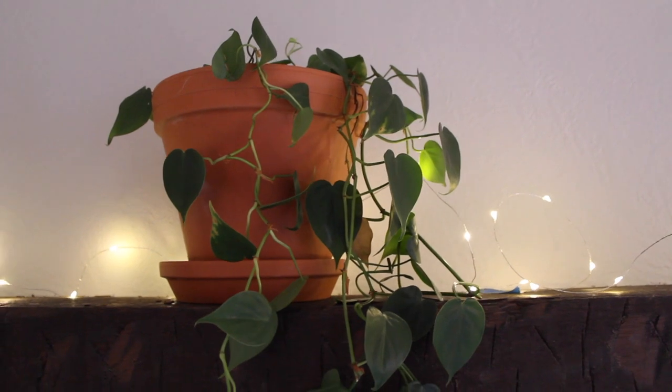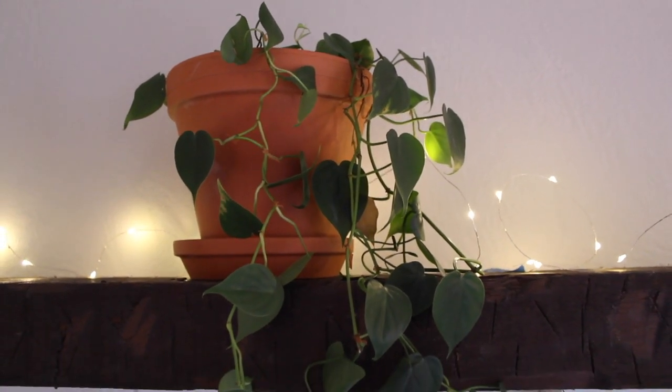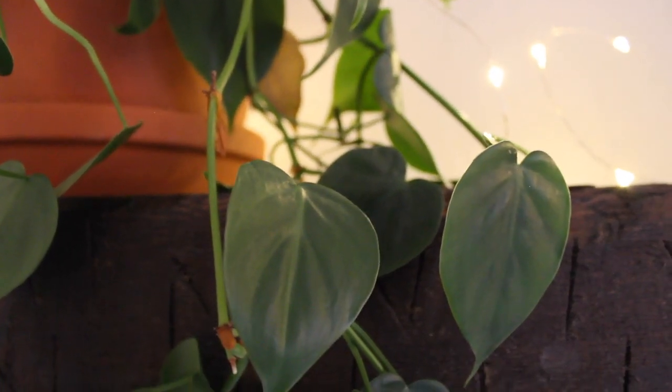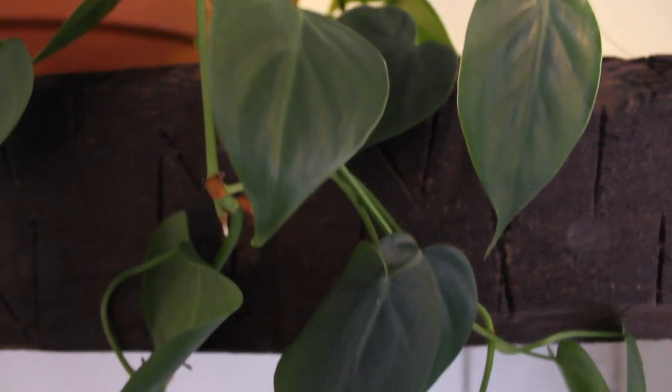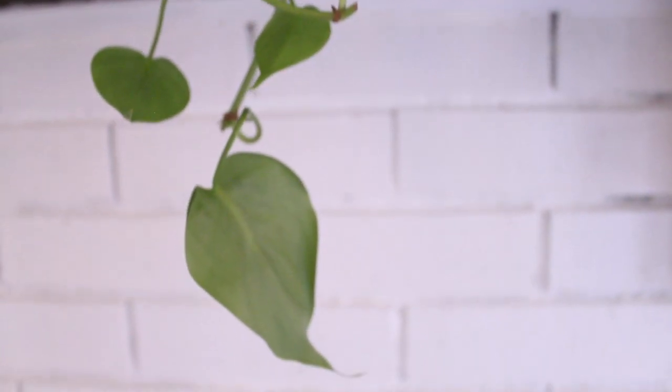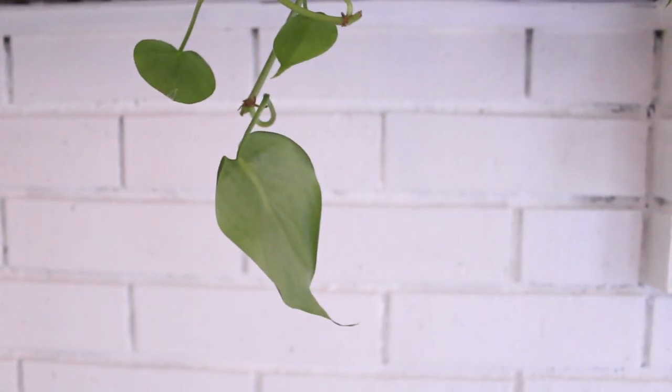Above that I have my heart leaf philodendron. I also propagate a lot from this plant. I just gave it a trim a few weeks ago - normally the vines are a lot longer. Anytime I propagate vines from this, I just stick the new vines back into that pot and just let them fall over the edge. This one's been a lot of fun over the years.